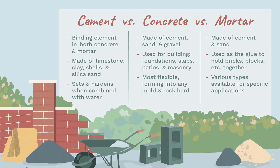Mortar is used to hold building materials such as brick or stone together. It is composed of a thick mixture of water, sand, and cement. The water is used to hydrate the cement and hold the mix together. The water-to-cement ratio is higher in mortar than in concrete in order to form its bonding element. When mixed, it is a much thicker substance than concrete, making it ideal as a glue for building materials like brick.